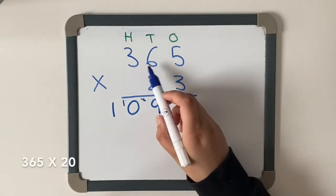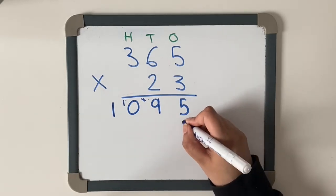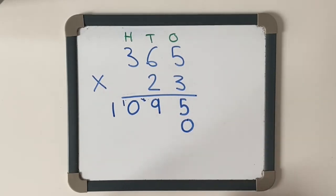to do 365 multiplied by 20. So we're going to focus on our tens column. I'm going to put a zero there because we've finished with our ones column now and we're starting with the tens column.